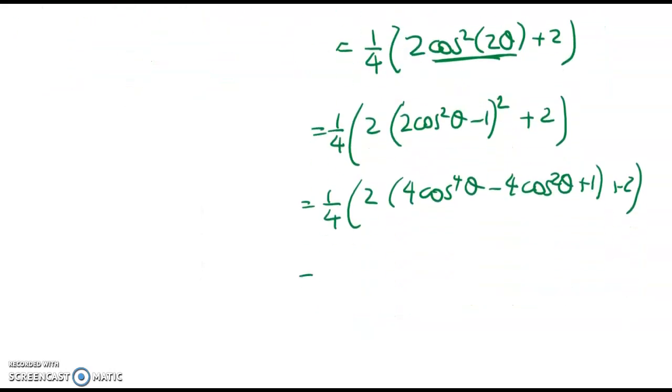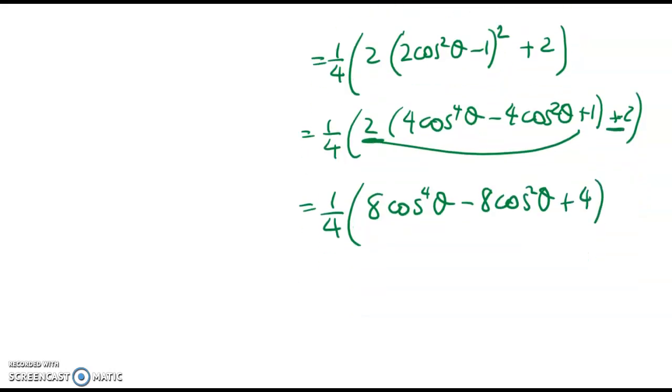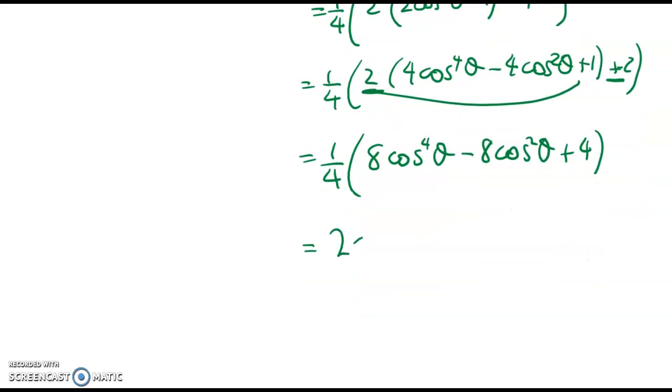You can see that the quarter is starting to be helpful here. We've got 8 cos to the power of 4 theta minus 8 cos squared theta plus 2 plus the 2 here, so plus 4. So you should be starting to feel pretty good now. We've got 2 cos to the power of 4 theta minus 2 cos squared theta plus 4.